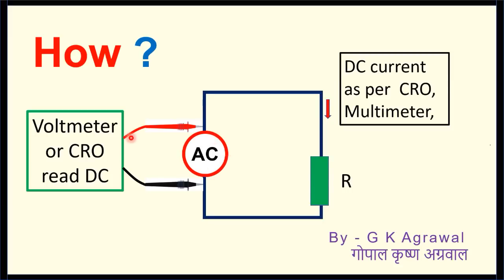Using voltmeter or CRO, they should read AC, but it does not happen. They are reading voltage across this AC supply as DC.